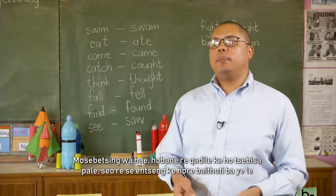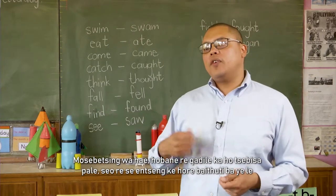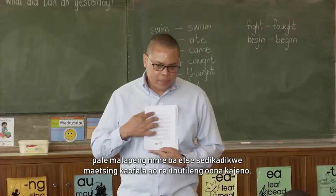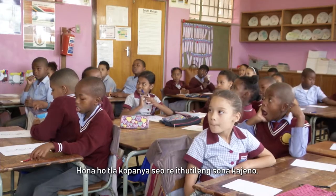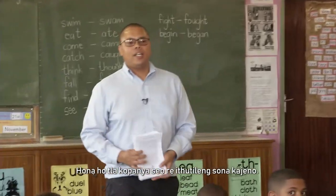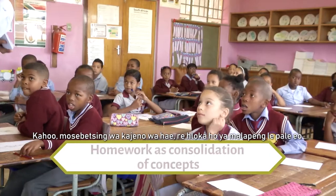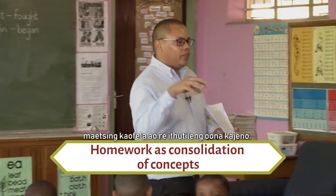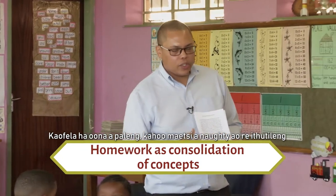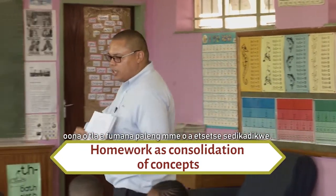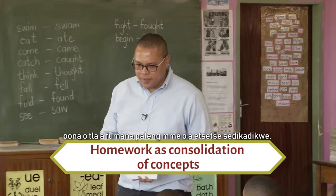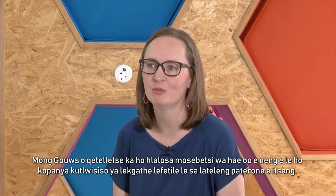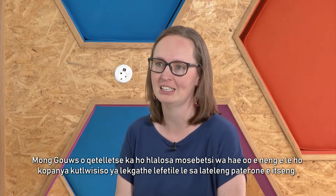For homework, because we introduced the story first, the learners had to take their story home and circle all the verbs that we learned today. This provides great consolidation for what we've learned in class. So for today's homework, the story that we read in class — you need to take it home and circle all the naughty verbs that we learned. All of them are in the story. Do we all understand? Yes, sir. Mr. Khos ended off by explaining the homework task, which was further consolidation of understanding irregular past tense.